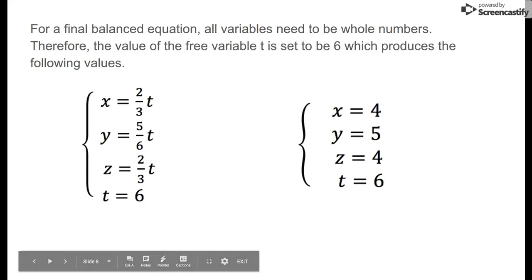Now, for a final balanced equation, all variables need to be whole numbers. Therefore, the value of the free variable t is set to six, which produces the following values where all the coefficients are whole numbers.